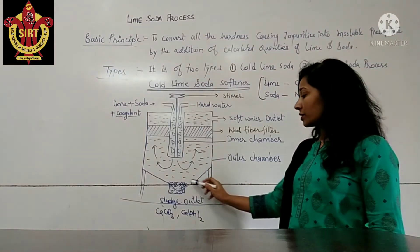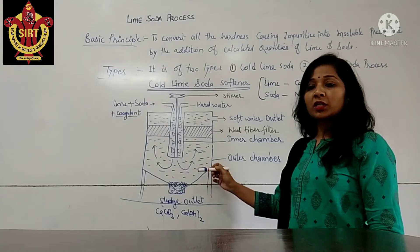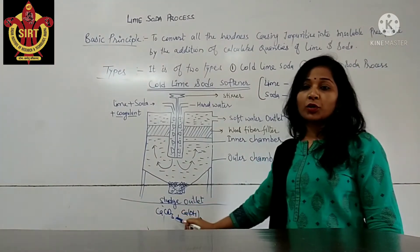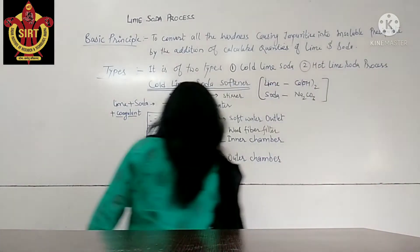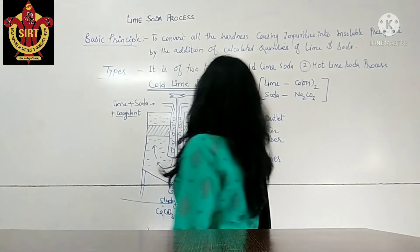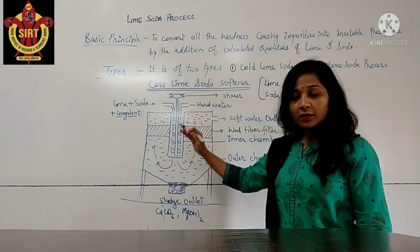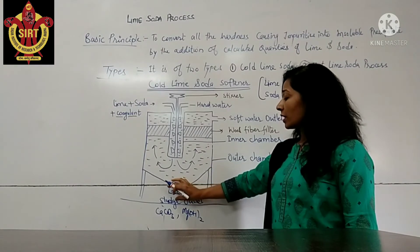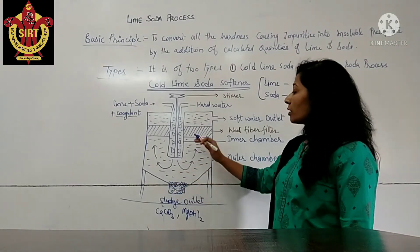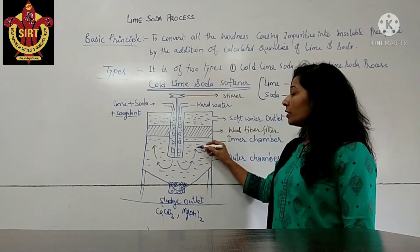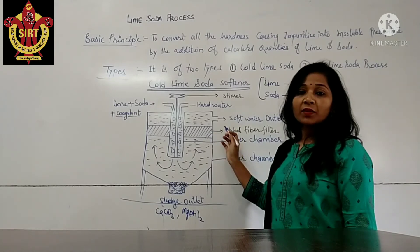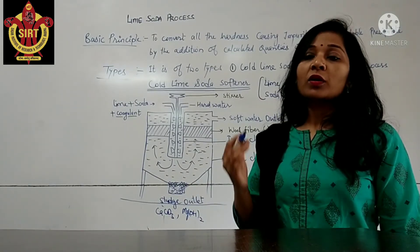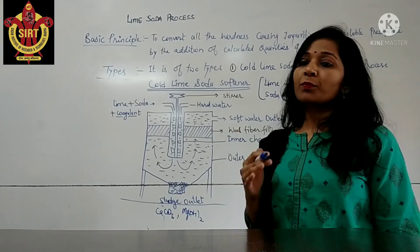In the outer chamber there is a sludge outlet, which is used for the collection or accumulation of the precipitate. The precipitate formed is in the form of calcium carbonate and magnesium hydroxide. Water from the inner chamber rises up through the outer chamber; the precipitate accumulates at the sludge outlet while water moves upward. When it moves upward, it passes through a wood fiber filter, which is used to ensure the complete removal of sludge and suspended impurities present in the water.